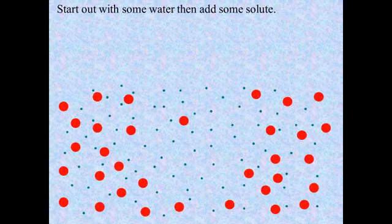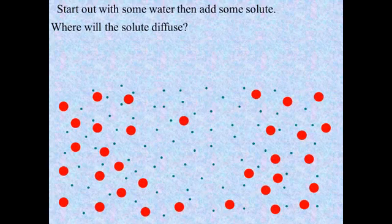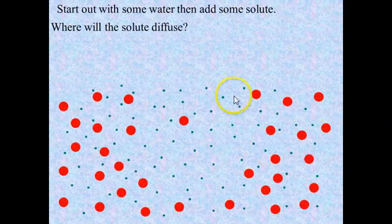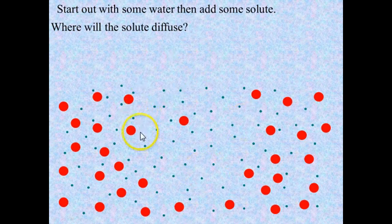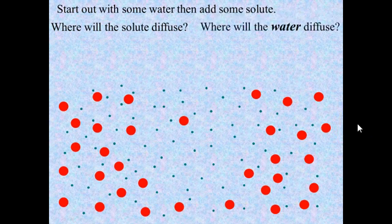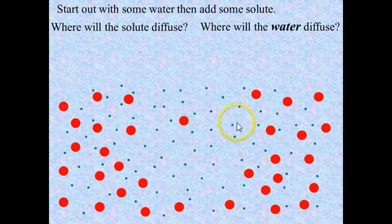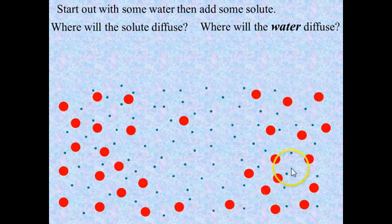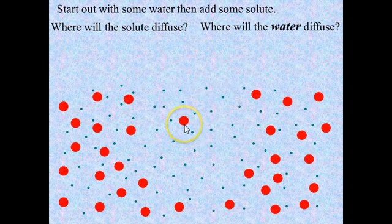Next condition. Again, we start off with some water, we add some solute, and ask where will the solute diffuse. Looking at this picture, we have just the reverse of the last situation — here in the middle there is very little solute, so the solute is going to diffuse in from the outside to the inside of this region. Where is the water going to go? In this area the ratio of water to solute is very high; out at the edges the ratio is very low, so the water is going to diffuse from the middle outward to the outside edges.